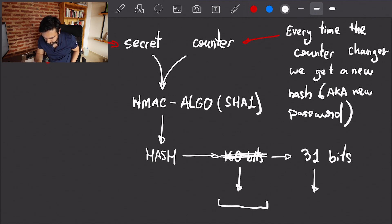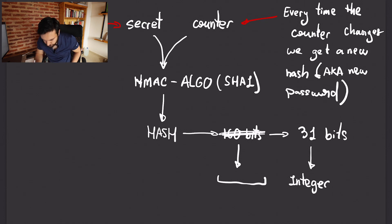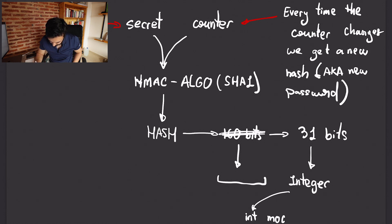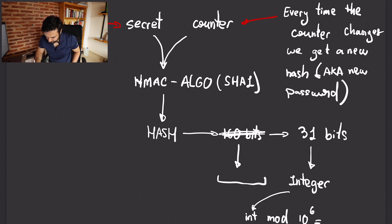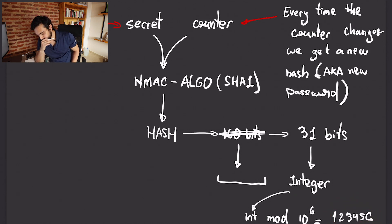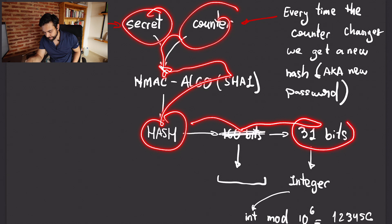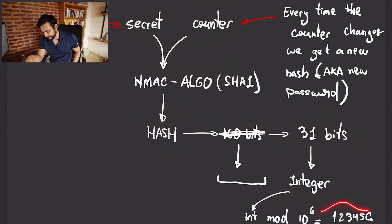So we take 31 bits and read them as an integer. Two to the 31 is a big number, so we only want maybe the last six digits. We pick six, which is the default. What you do is take that integer and apply the modulus operation: mod 10 to the 6, six being the number of digits we want. This gives you a number with six digits, and that's what we ask the user to input.